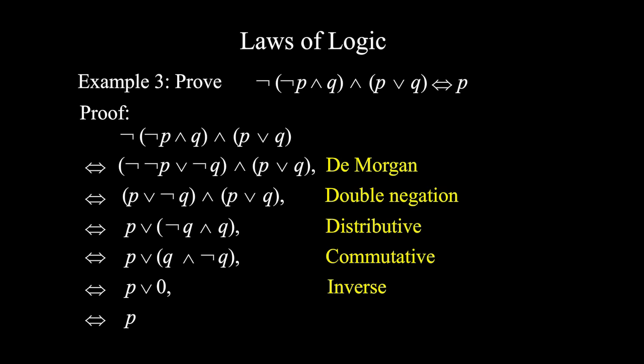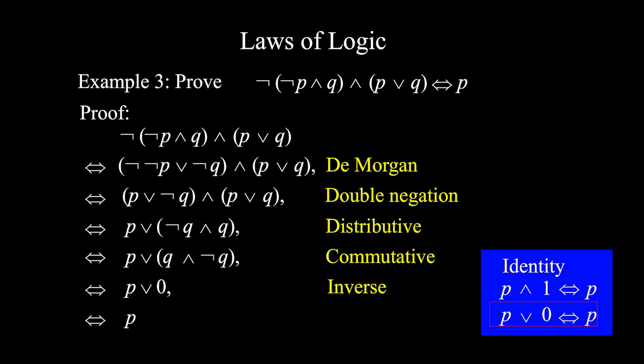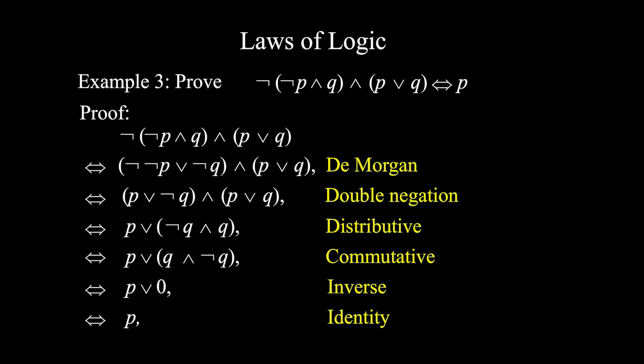Finally, apply the identity law. So P ∨ 0 is equivalent to P. We are done — we have proved this logical equivalence.